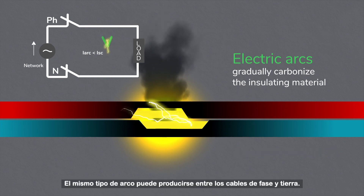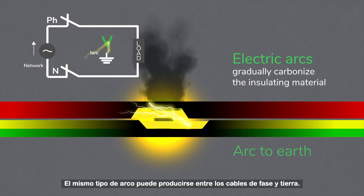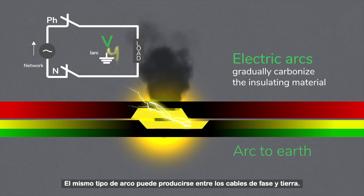The third type of arc fault is arc to earth. It can happen between the phase and earth cables.